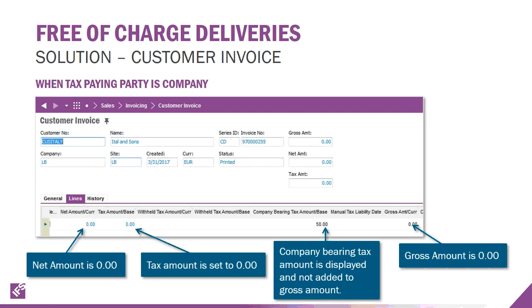With some different scenarios — for example, when the tax paying party is the shipping company, the net amount for the order is zero and the tax amount shown to the customer is zero. However, the shipping company is bearing the tax amount, which is displayed on the order line. The customer receiving the goods sees no charge, but the $50 tax is a liability that gets posted.